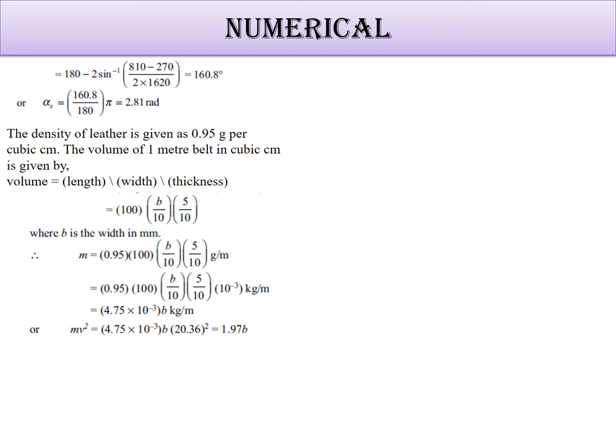Mass will be 0.95 times this volume in grams per meter. Converting all these values, we get m in terms of b. The mv square equals 1.97 times b.